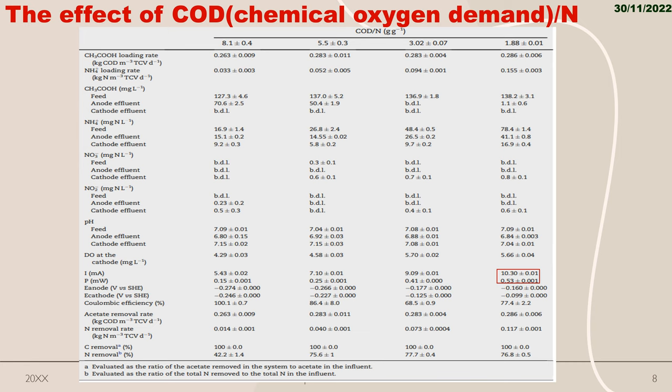At lowest COD, maximum nitrogen removal occurred, but please consider the remaining ammonium amount. It was so high, nearly 17%. So low COD ratios led to unbalanced nitrification or denitrification rates.